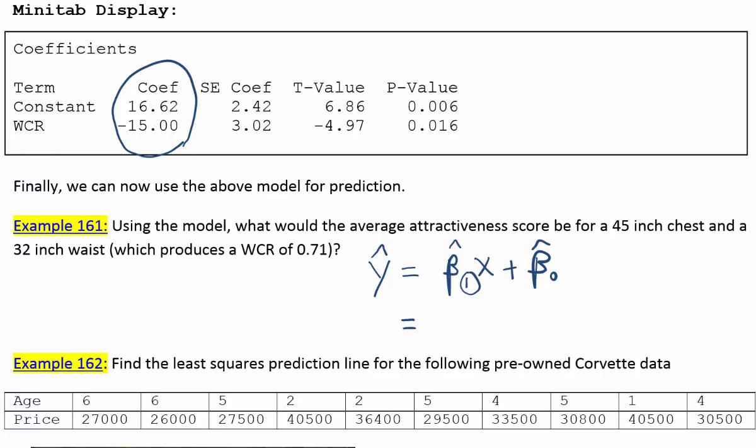Alright, let's go ahead and plug the numbers in then. So beta1-hat is basically going to be here negative 15.00x, or just negative 15x, plus the y-intercept, which is 16.62.